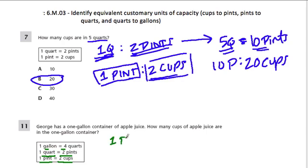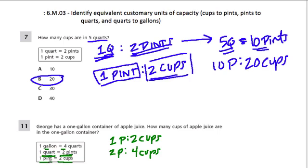For every one pint there are two cups. So if one quart is two pints, then two pints equals how many cups? One pint is two cups, so two pints is four cups. So for every two pints we have four cups. And that's important because one quart equals two pints, and we know how many quarts go in a gallon — four quarts go in a gallon. So four cups are in one quart.